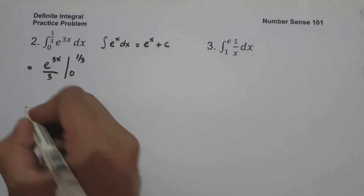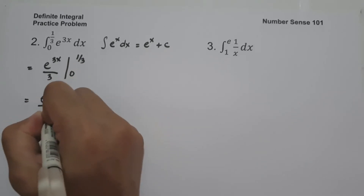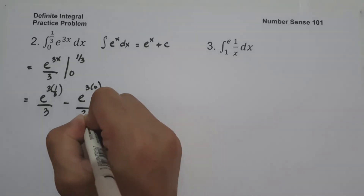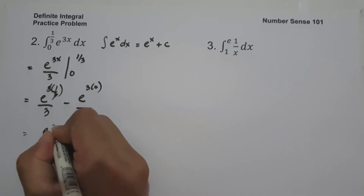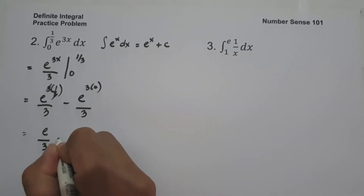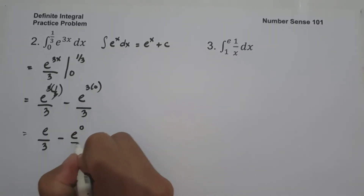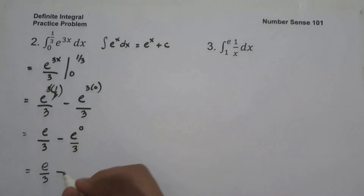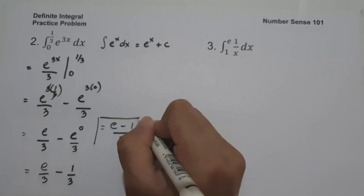Substituting the value of x: e raised to 3 times 1/3 over 3 minus e raised to 3 times 0 over 3. The 3s cancel to give e raised to 1, simply e, over 3 minus e raised to 0 over 3. Since e raised to 0 is 1, this becomes e over 3 minus 1 over 3, which can be written as e minus 1 over 3. This will be our answer.